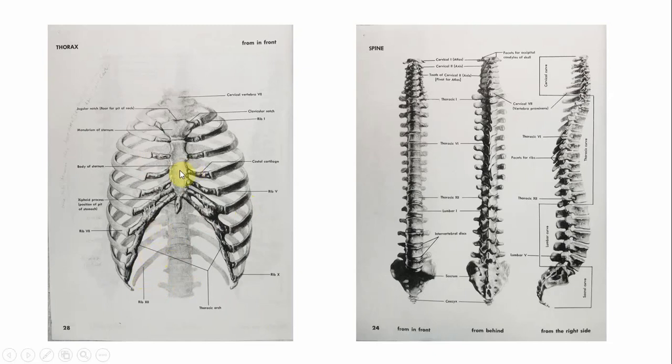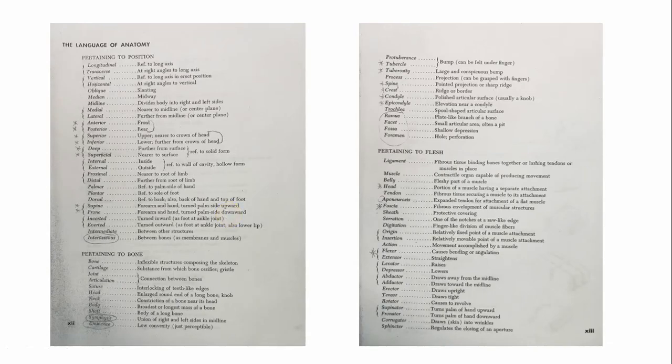True ribs are ribs that attach to the sternum, where each rib has a single piece of cartilage that attaches it directly, and does not share any cartilage with any other rib. The false ribs are the ribs that all are attached by a shared piece of cartilage. That's the definition.